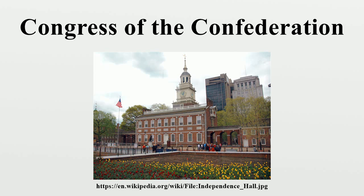The Articles of Confederation and Perpetual Union were signed by delegates of Maryland at a meeting of the Second Continental Congress, which then declared the Articles ratified. As historian Edmund Burnett wrote, there was no new organization of any kind, not even the election of a new president. The Congress still called itself the Continental Congress. Nevertheless, some modern historians would later refer to the Continental Congress after the ratification of the Articles as the Congress of the Confederation or the Confederation Congress.